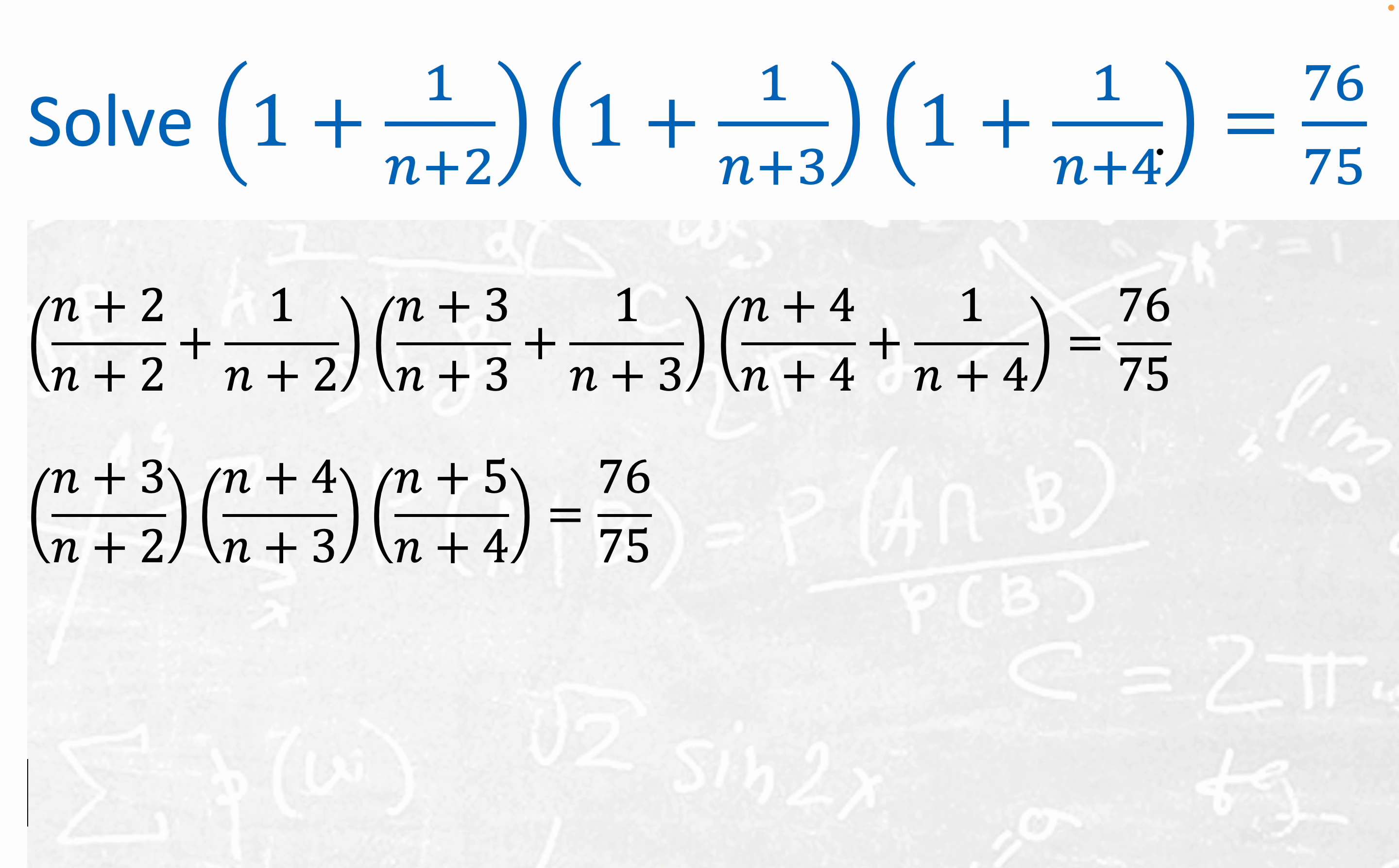Now notice that if we multiplied this left-hand side out, we would have eight distinct terms, and it would probably be a difficult process from that point of view.